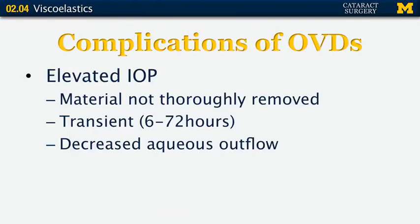What are some of the complications of viscoelastic devices? There aren't many — really, it's elevated intraocular pressure. This occurs when the viscoelastic material isn't completely removed from the anterior chamber. It is transient, but it can be exquisitely painful because pressures can go very high. The viscoelastic substance basically decreases the outflow of aqueous — it clogs up your drainage system. If it's a dispersive agent, those are shorter molecules and things usually exit in a shorter period of time. But a highly cohesive agent made up of a long chain polymer can take a long time to make its way out of the eye.